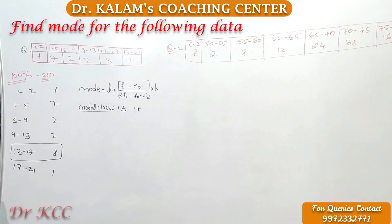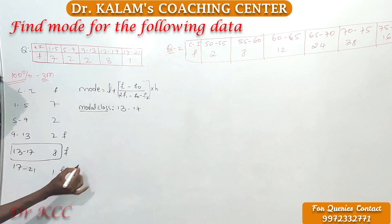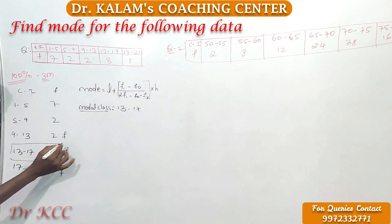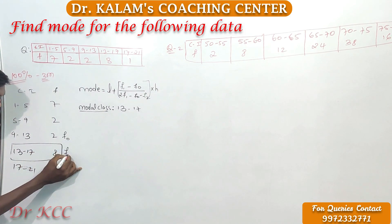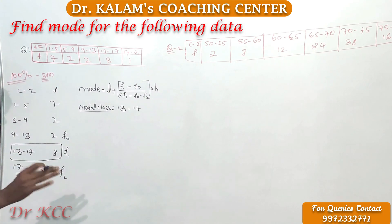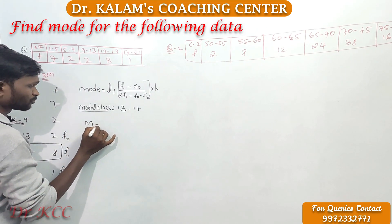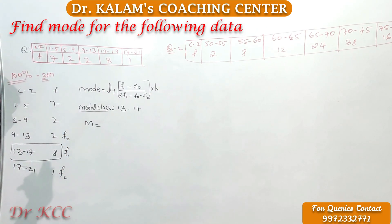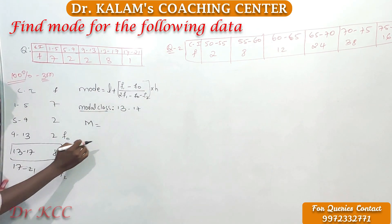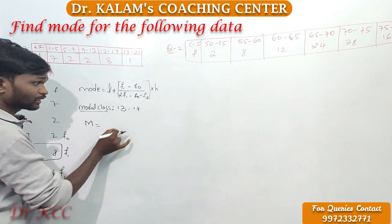Now fix your frequencies. Label them 0, 1, 2 — the modal class gets label 1, the class before it gets F0, and the class after gets F2. The confusion is zero once you follow the counting: 0, 1, 2. Now substitute your values. Mode equals L, where L is the lower limit of the modal class — that is 13.